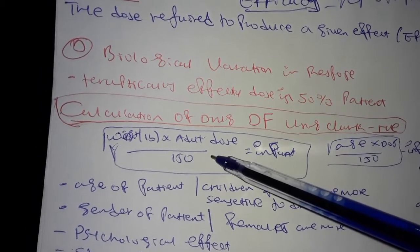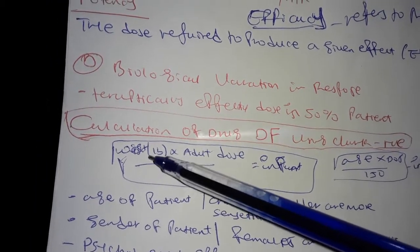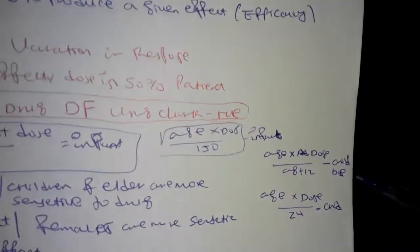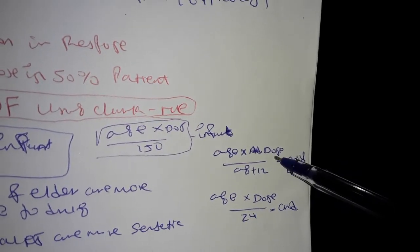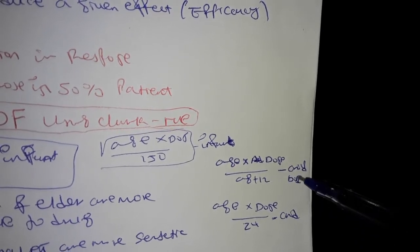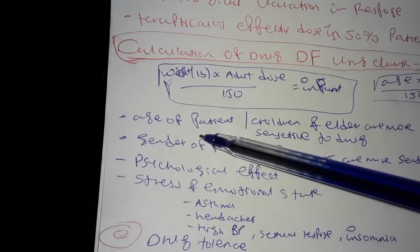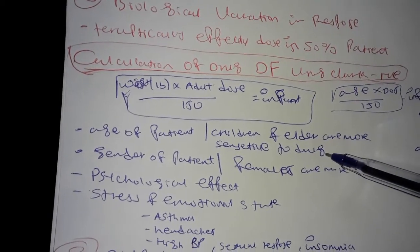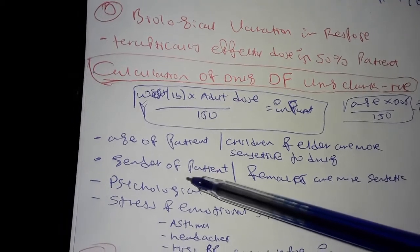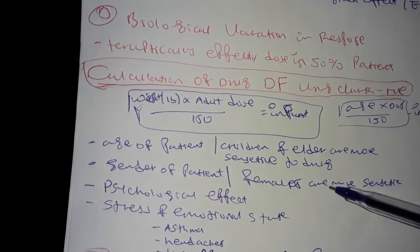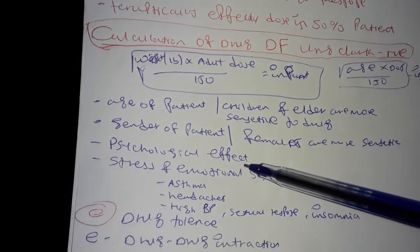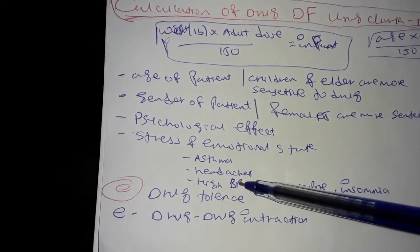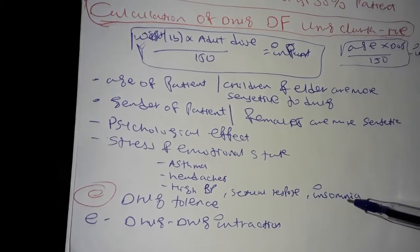Factors affecting drug response include age - children and elders may be more sensitive. There are variations in drug sensitivity. Psychological effects like stress and emotional state, as well as physical effects, can influence drug response.